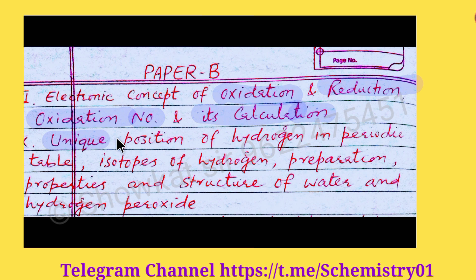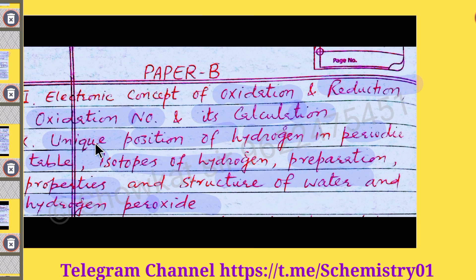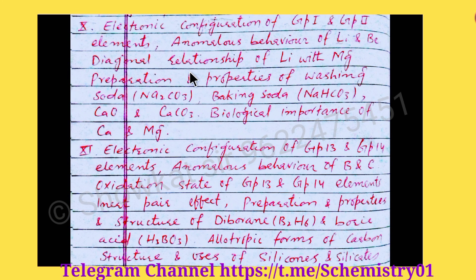The next chapter is Hydrogen. Here you will study the unique position of hydrogen and its anomalous behavior. You should be able to write why hydrogen is known as a rogue element and its position in the periodic table. You will study the isotopes of hydrogen, preparation and properties, the structure of water, and similarly hydrogen peroxide — its structure is very important.